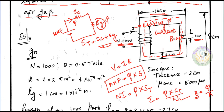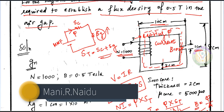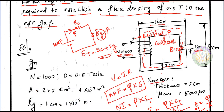The flux density B is 0.5 tesla. The cross-sectional area A is needed. The core dimensions are: thickness 2 cm and width 2 cm. The core permeability: the relative permeability mu_r is equal to 5000. This is the permeability of the particular core material. So we have to substitute these values into the formula.